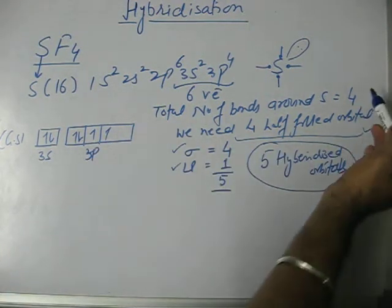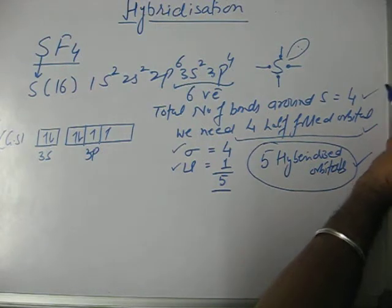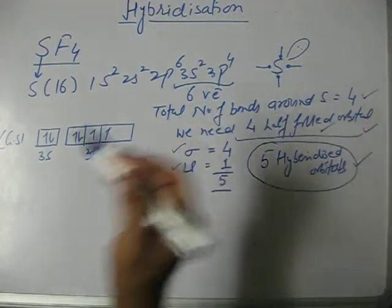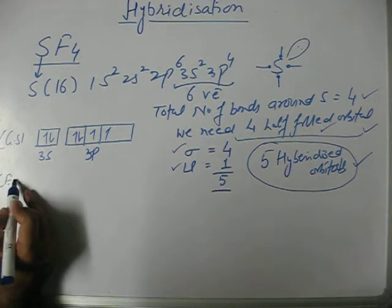But we need four bonds, so that means we need four half-filled orbitals. So for that, sulfur has to move into the excited state.